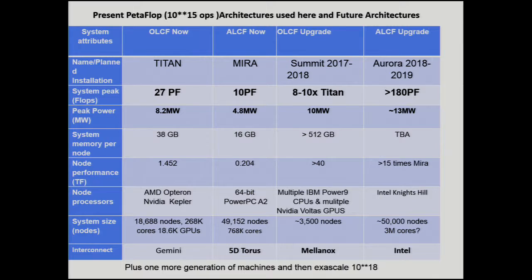We've got Titan with a peak of 27 petaflops, Mira with about 10, moving to Summit which is 8 to 10 times Titan, then Aurora eventually with more than 180 petaflops — different communications networks, very different energy requirements, but relatively low increases in peak power required by these machines. So this all looks very promising.